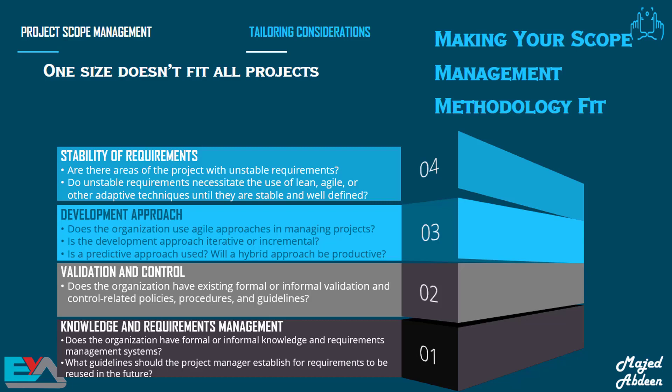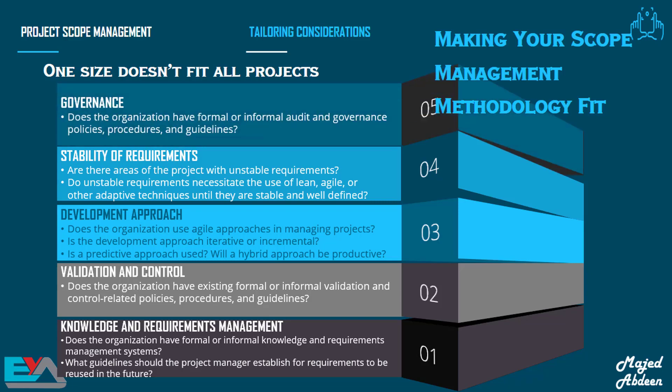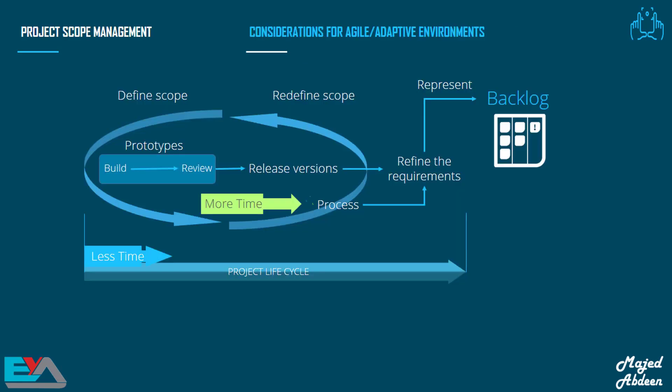And lastly, we have governance. Governance is associated with decision-making, oversight, control, and integration. We want to know: does the organization have formal or informal audit and governance policies, procedures, and guidelines? We talked about governance in detail in Chapter 2. Don't forget — as part of the project, you will need to document the tailoring process approach in the project management plan.